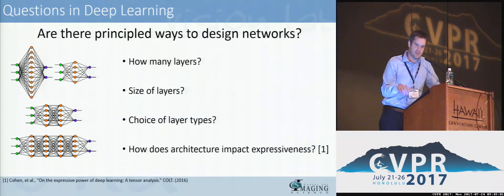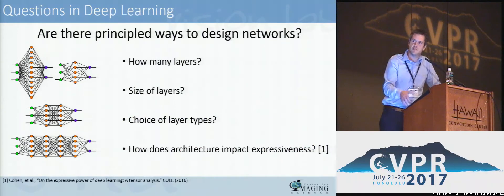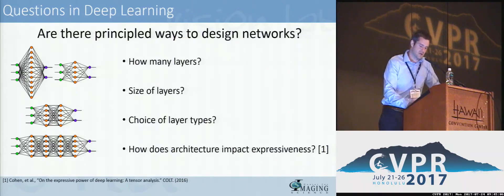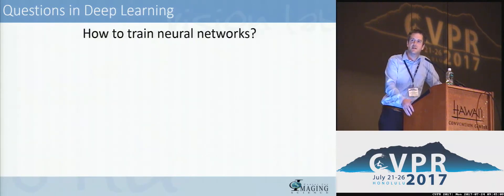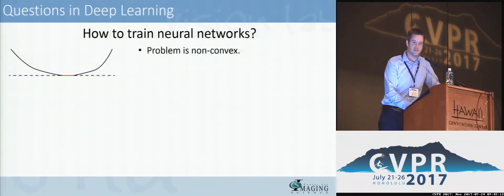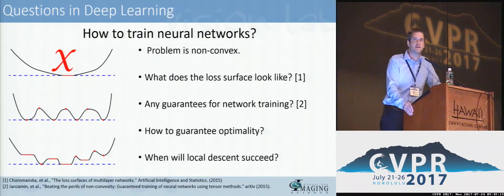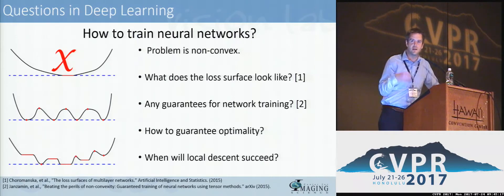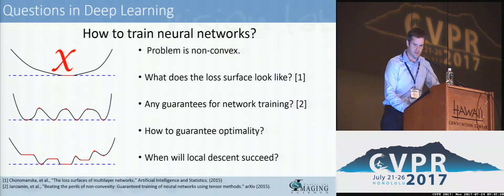Some of the basic questions you might ask about deep learning: first, are there principled ways that we can design networks? Then, once you've designed your networks, how do we train neural networks? We know that the network training problem is non-convex, but can we say anything else about it? Can we make any guarantees about converging to global optimality, not getting stuck in poor local minima?